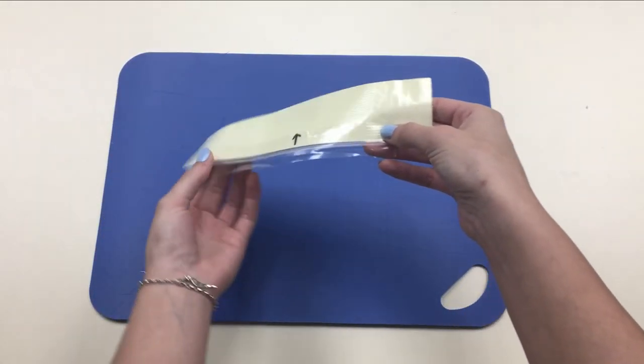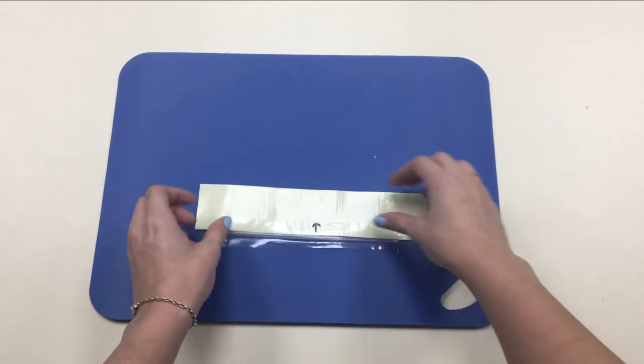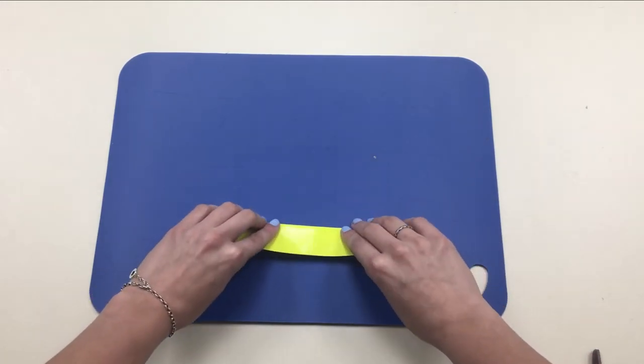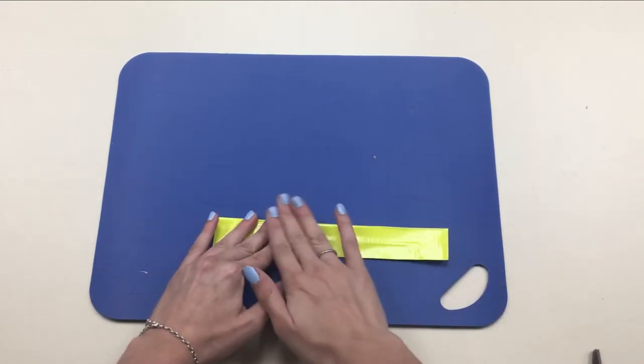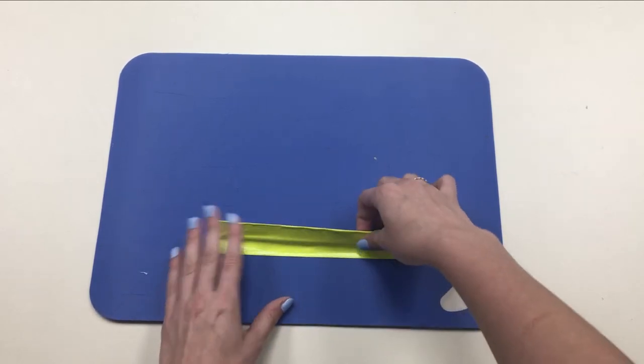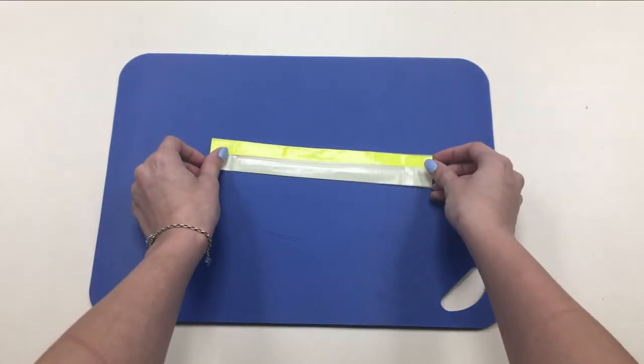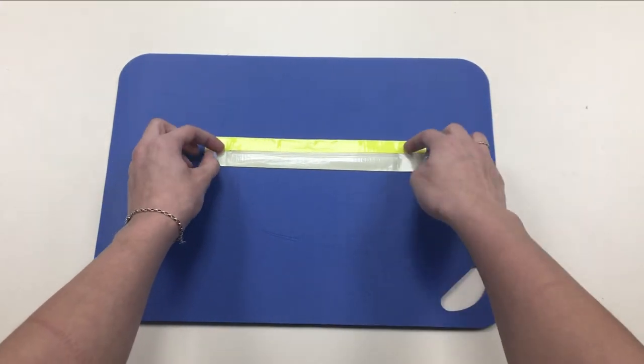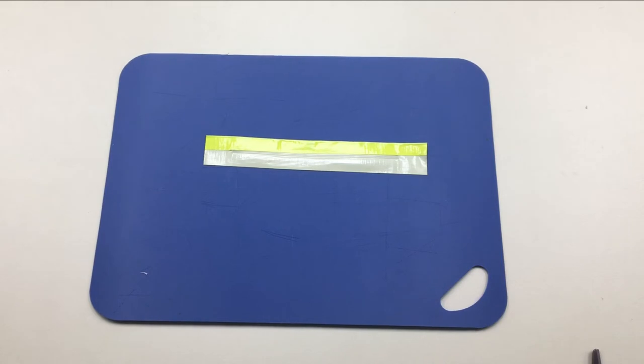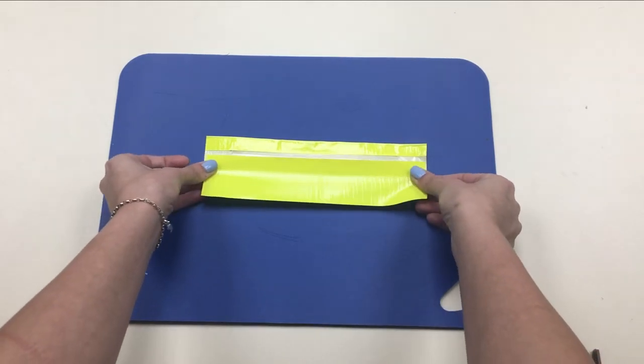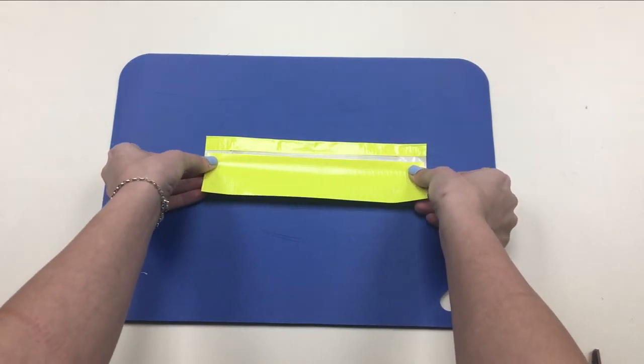Then turn it around and fold your piece of duct tape over. Turn it around again. You are going to get another piece of duct tape of the same size. Put it under the seal. Make sure not to cover the seal.